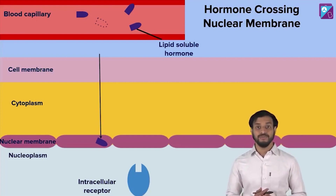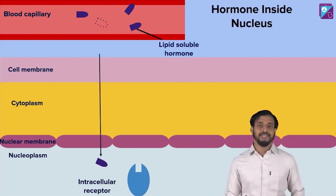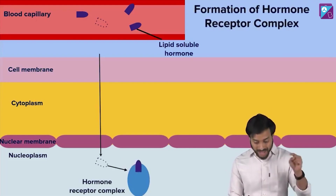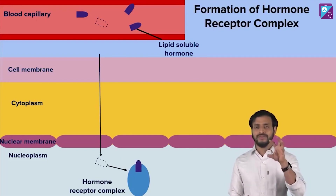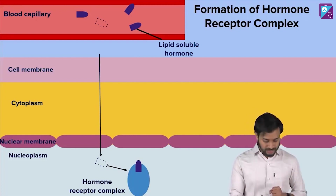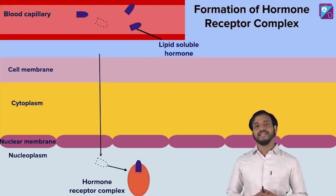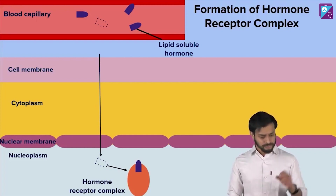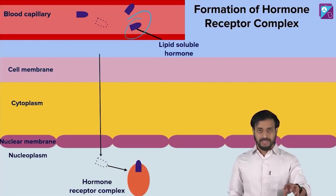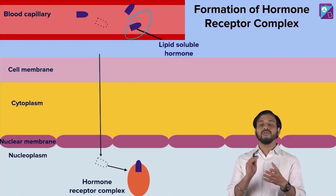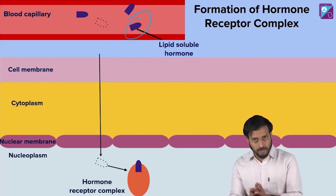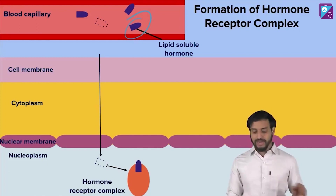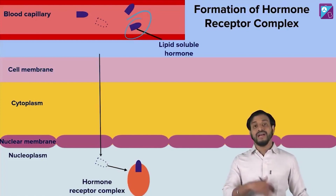The hormone will reach inside the nucleus where the intracellular receptors are present, and binding will happen. Once binding happens, a hormone-receptor complex is formed. This results in a change — basically activating the receptor proteins. So these hormones cross the membrane, go intracellular, bind to the receptors, and the hormone-receptor complex converts the receptors from their inactive to active form.